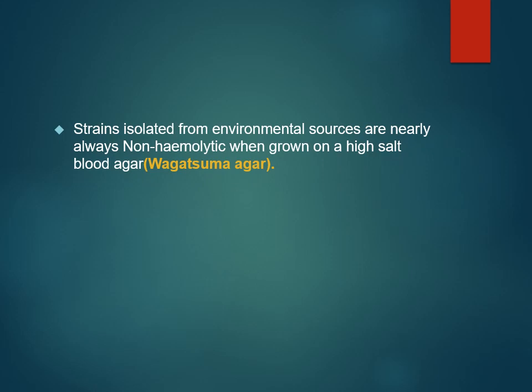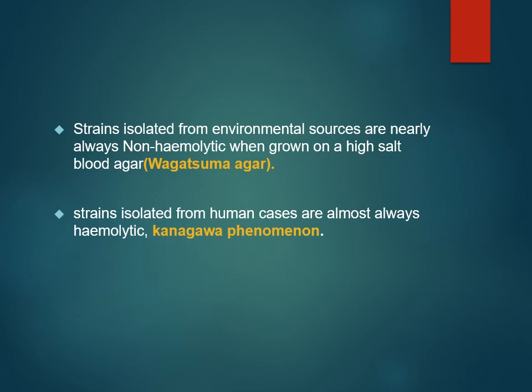Vagasuma agar is a high-salt blood agar. Vibrio parahaemolyticus isolated from environmental sources is always non-hemolytic and non-pathogenic. To differentiate pathogenic from non-pathogenic strains: strains isolated from human cases — not from the environment — are always hemolytic. This is known as the Kanagawa phenomenon. Vibrio parahaemolyticus also shows swarming.